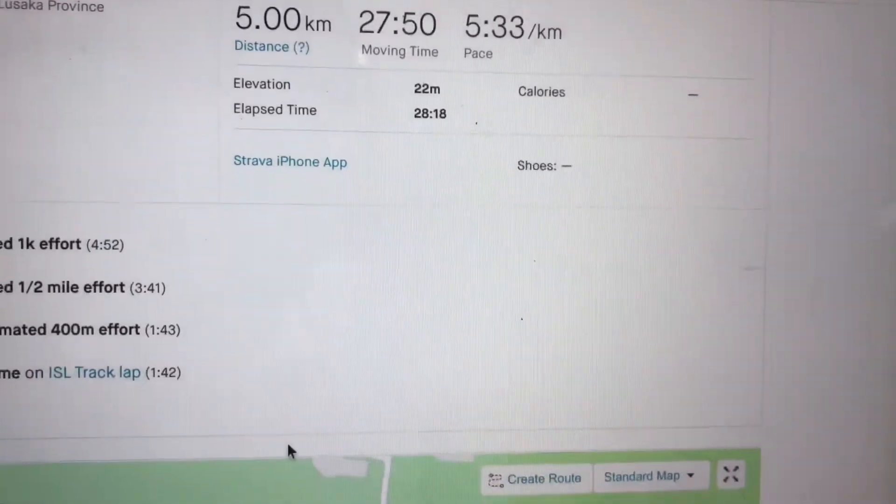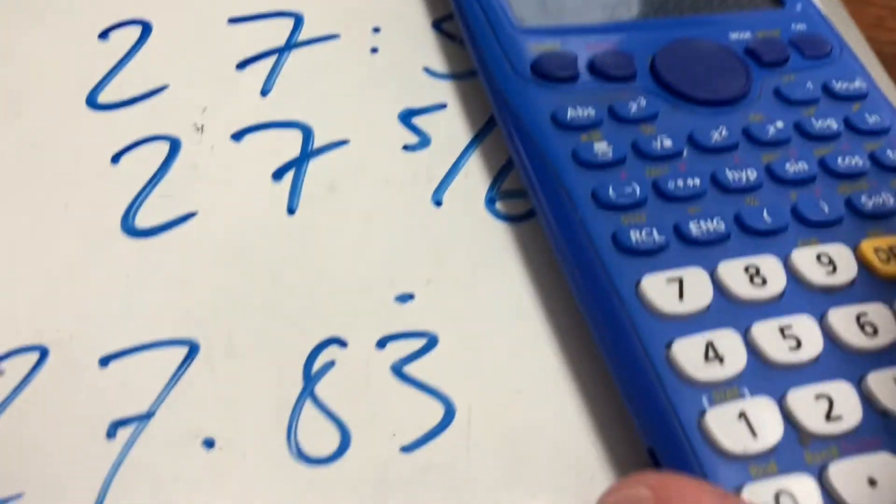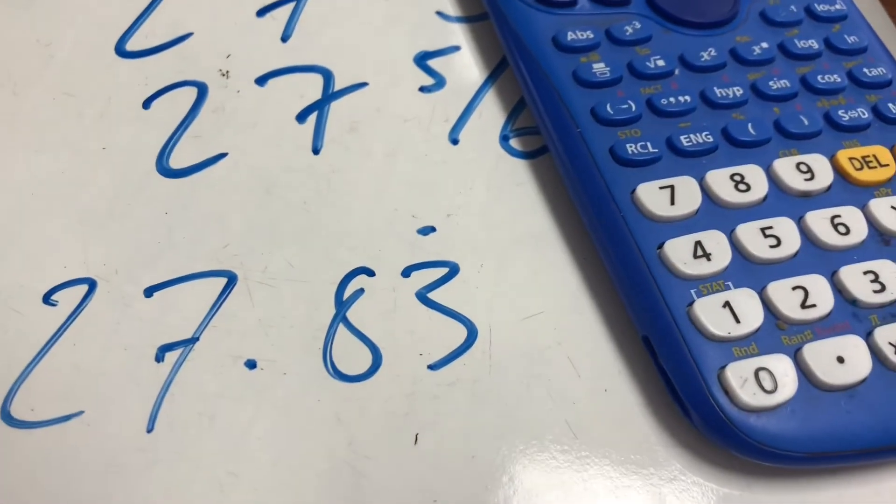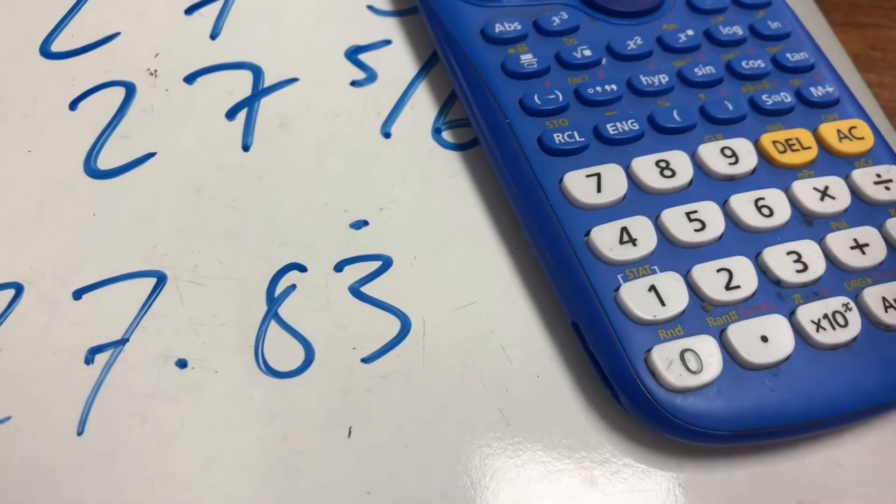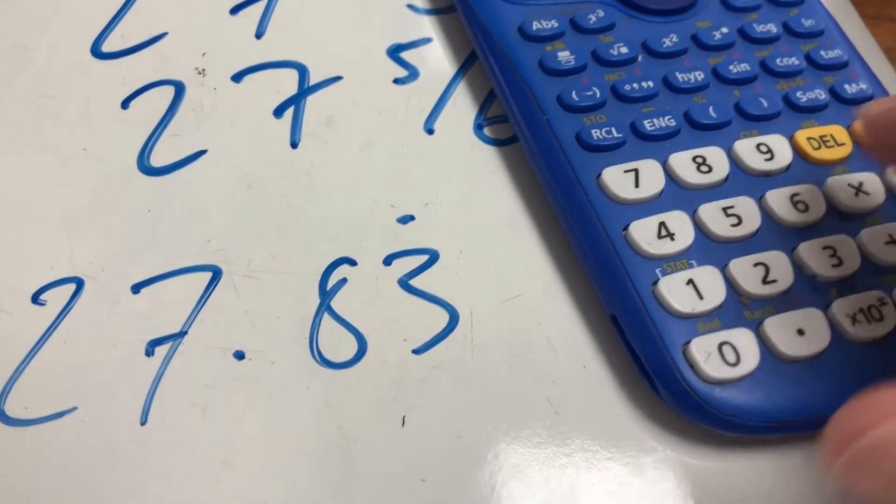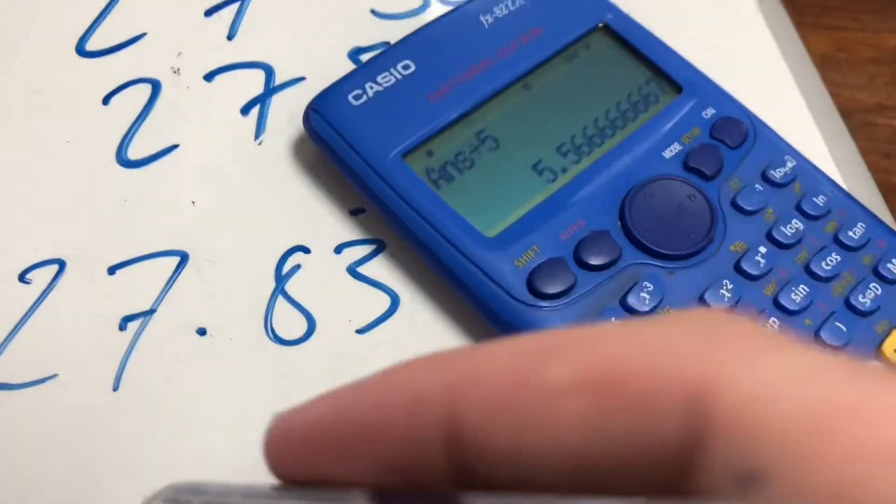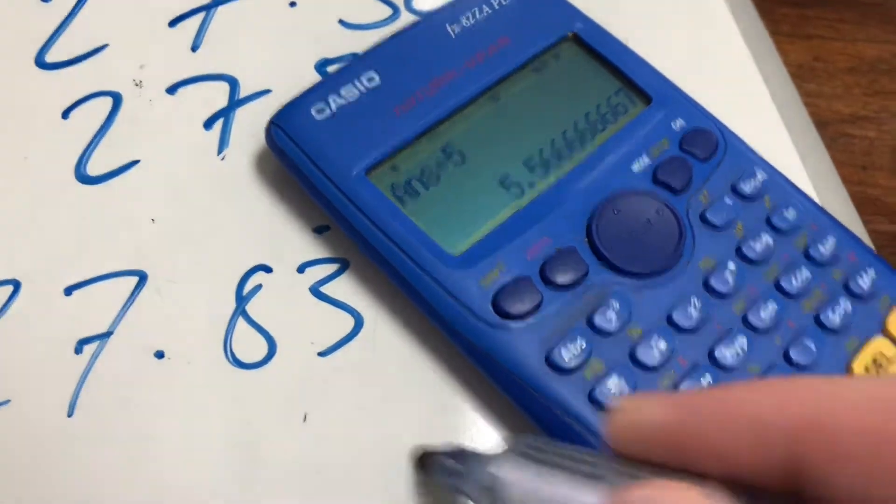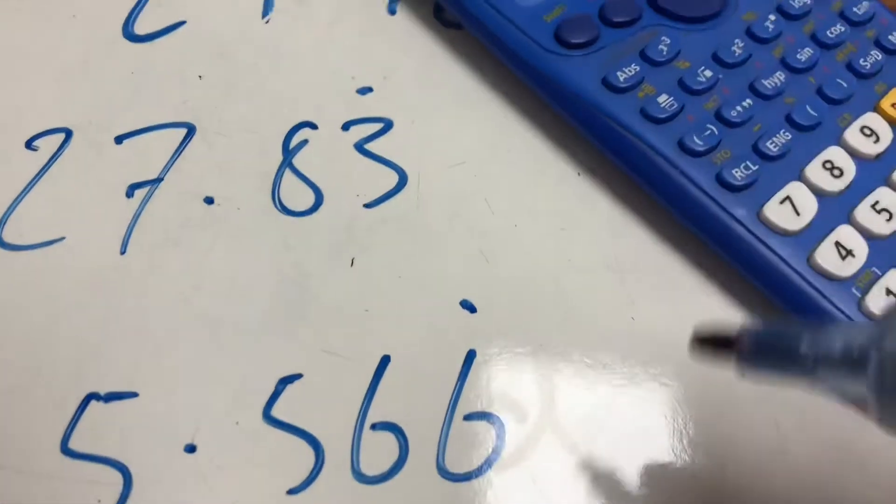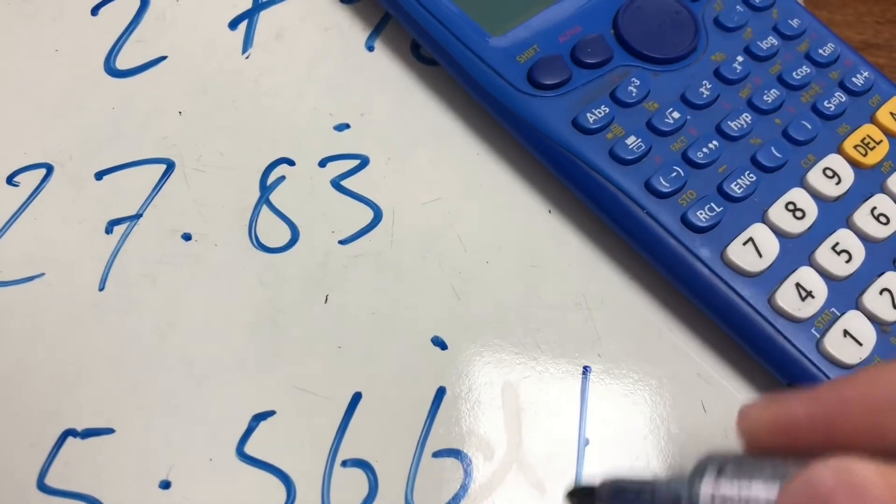How do we get that number they've got there? So it took 27 minutes 50 seconds to do 5 kilometers. So I divide that by 5 and I get 5.56 recurring minutes per kilometer.